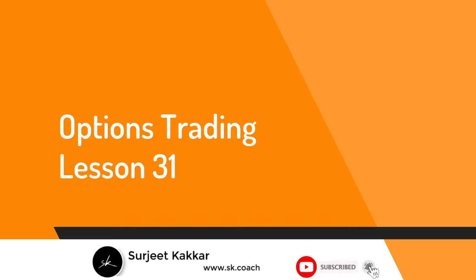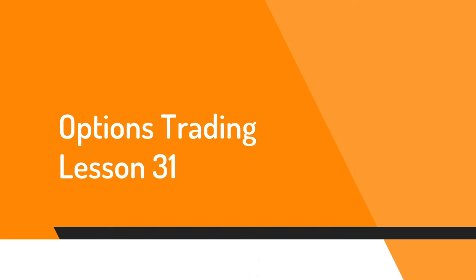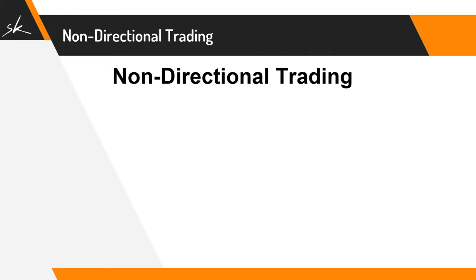Similarly, short straddle is again a strategy where the risk is unlimited. What we will be doing in Iron Butterfly is adding those protective units, which will convert the short straddle into an Iron Butterfly. With options, we can do something called non-directional trading, which is not possible with stocks or futures. In stocks and futures, you're always trading a particular direction — either expecting prices to move up or down. But in options, we can do non-directional trading, meaning we are not betting on direction, because option is a multi-dimensional asset.